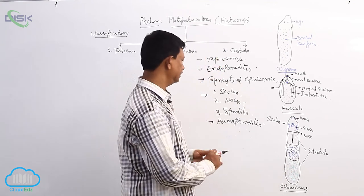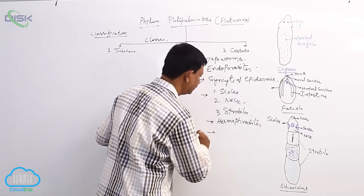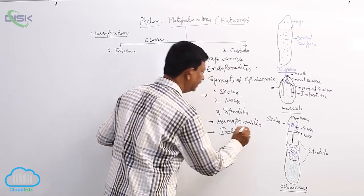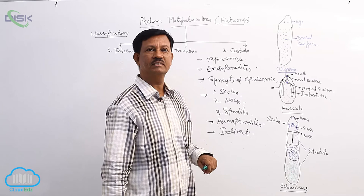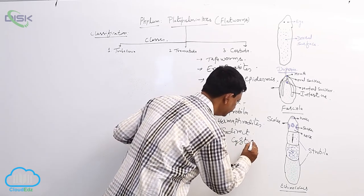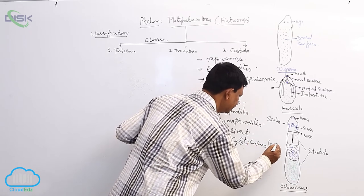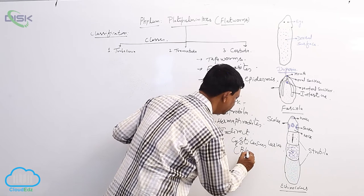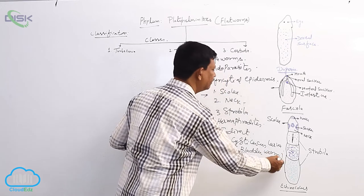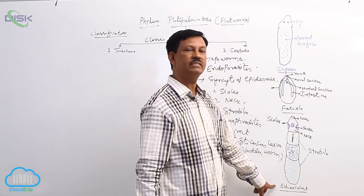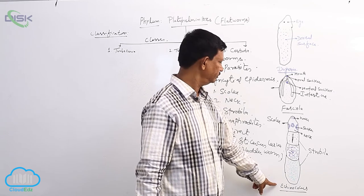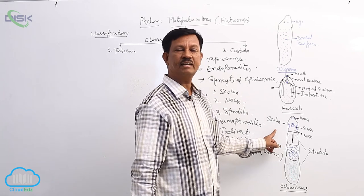Development is indirect. In the life history, a larval form is present known as the cysticercus larva, also known as bladder worm. Sometimes multiple hosts are required. Echinococcus is found in the intestine of dogs, hence it's known as the dog tapeworm.